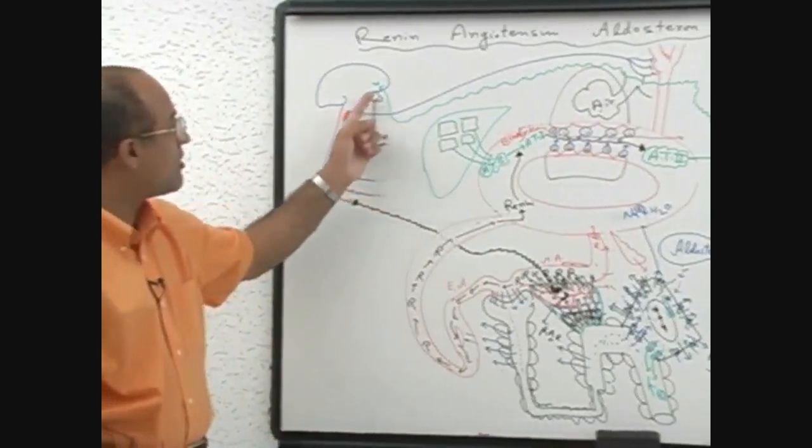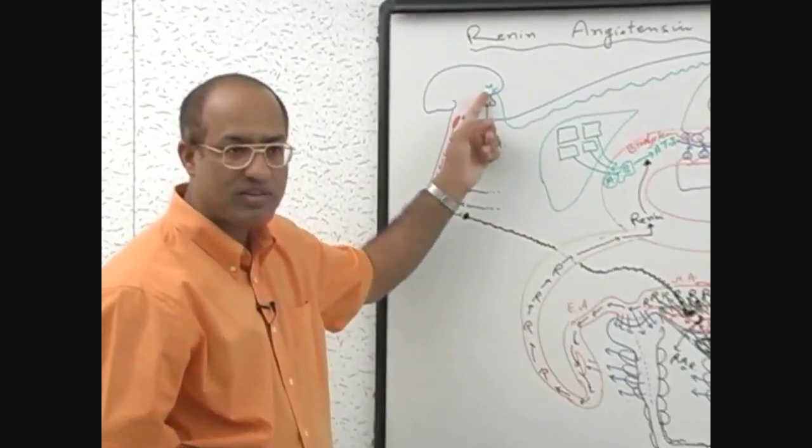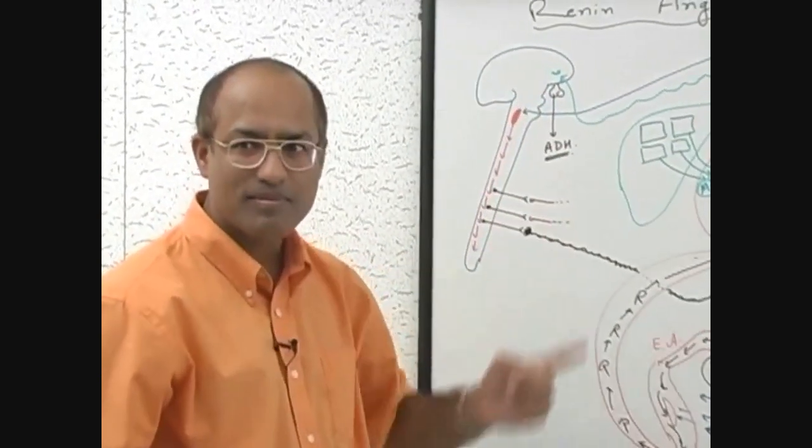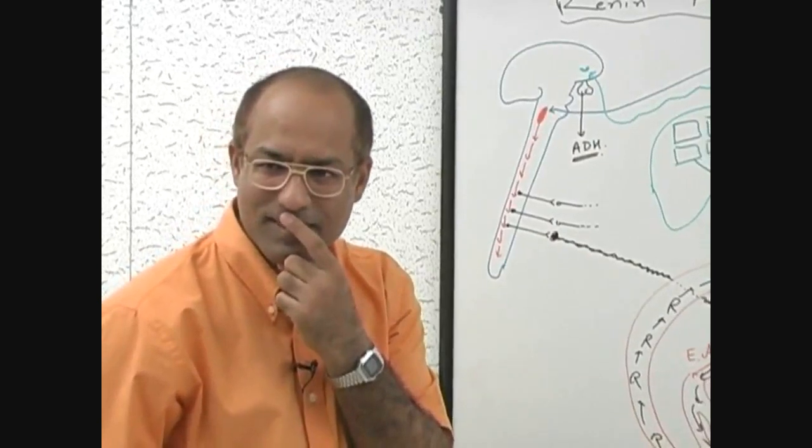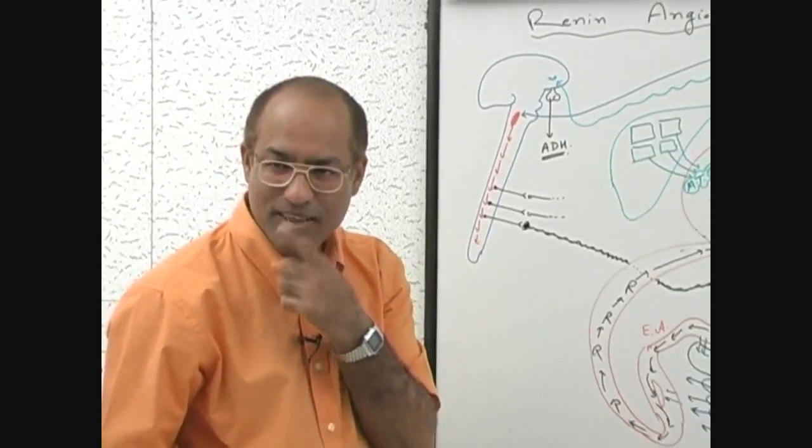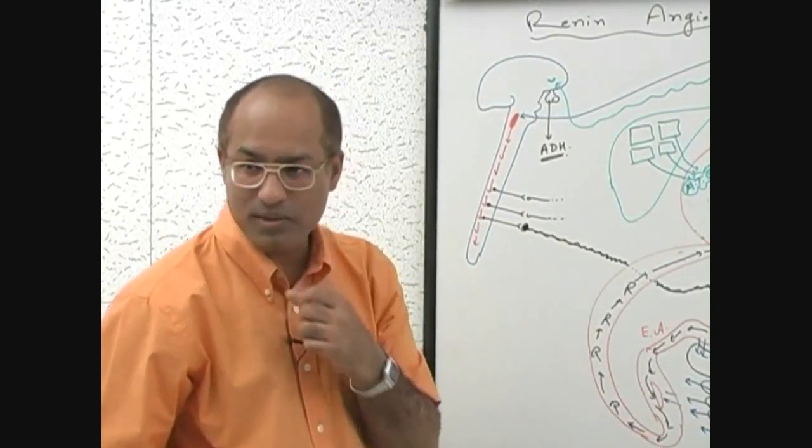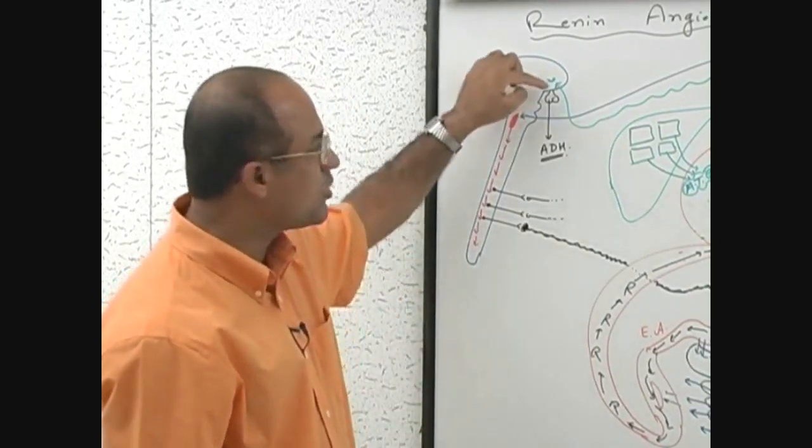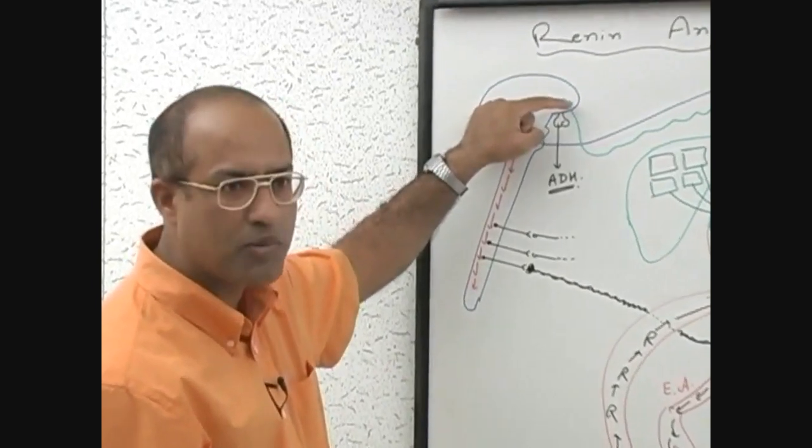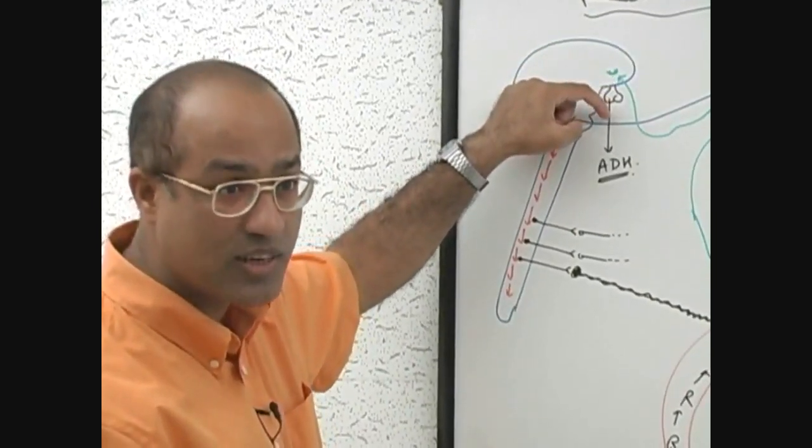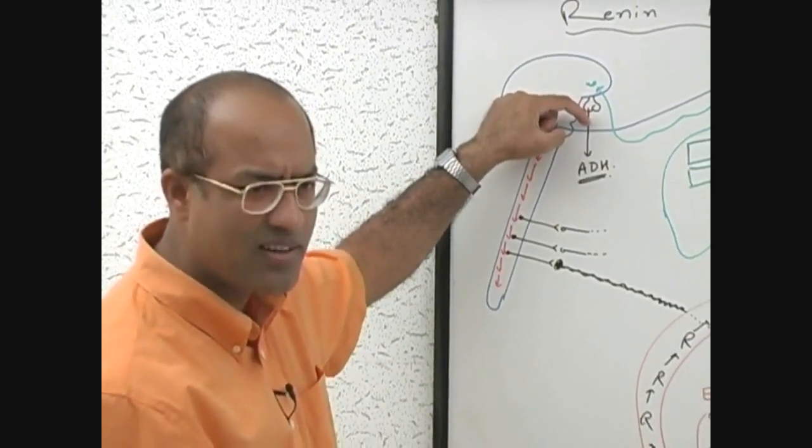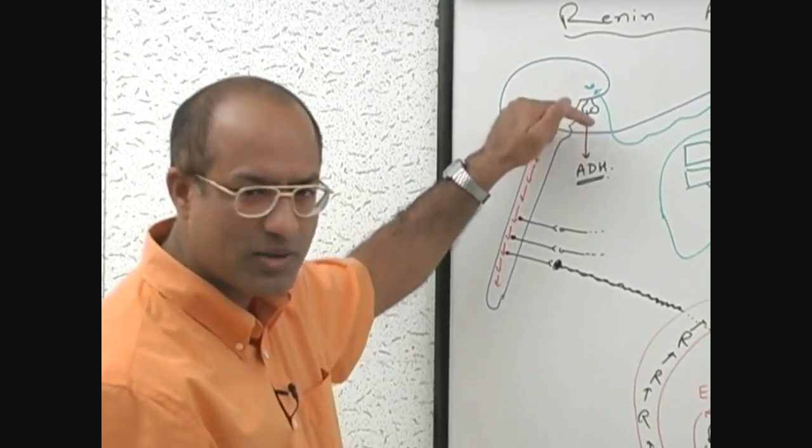Now angiotensin-2 has made a long travel, going to the hypothalamus, stimulating which nucleus? Angiotensin-2 stimulates ADH release from the supraoptic nuclei. Excellent. Supraoptic nuclei are stimulated and eventually the supraoptic nucleus has nerve endings in the posterior pituitary, and from there ADH comes into blood.